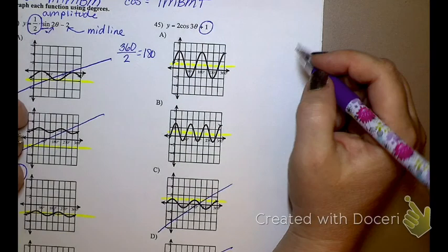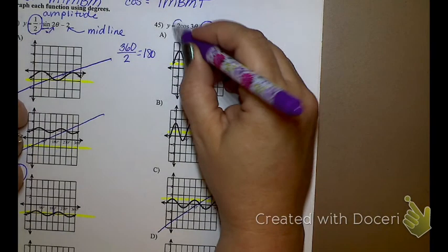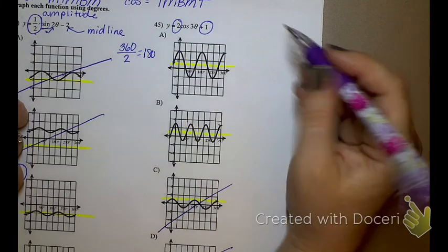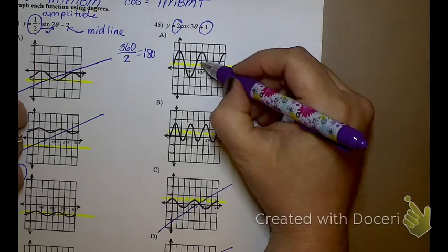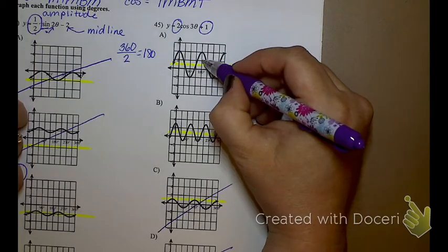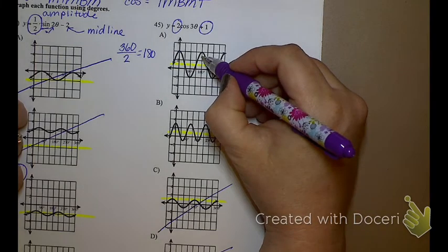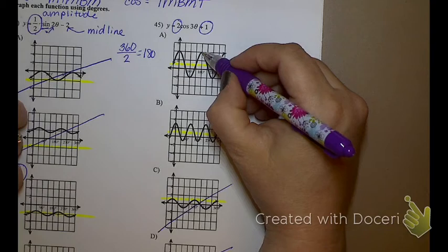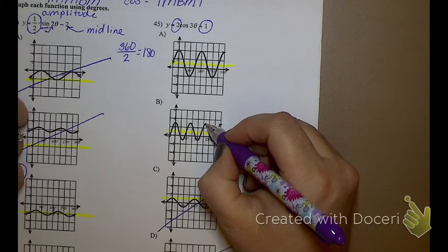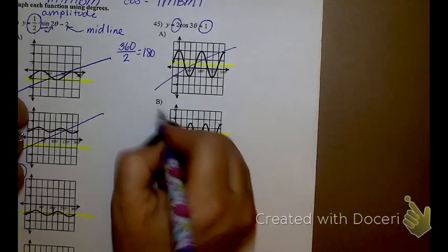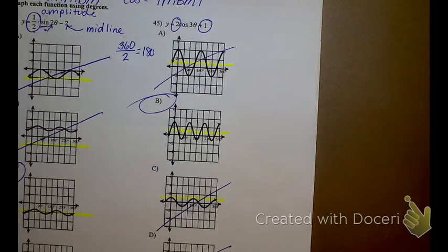Next thing I need to look at is amplitude. The amplitude is 2, which means that it's got to go up 2 and down 2. Now this is counting by 2s. So going up 2 would be 1, 2. If it goes all the way up to 4, that's going more than 2, isn't it? Yes. How about this one? Is this one going up 2? That one looks like it's going up 2. So that one has the wrong amplitude. That would be our answer right there.